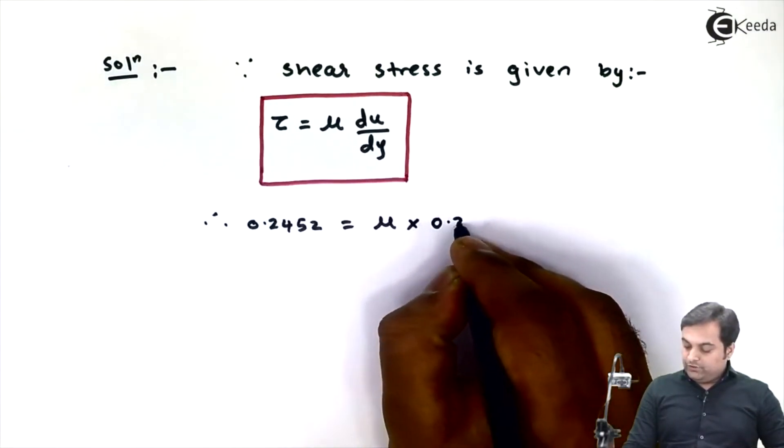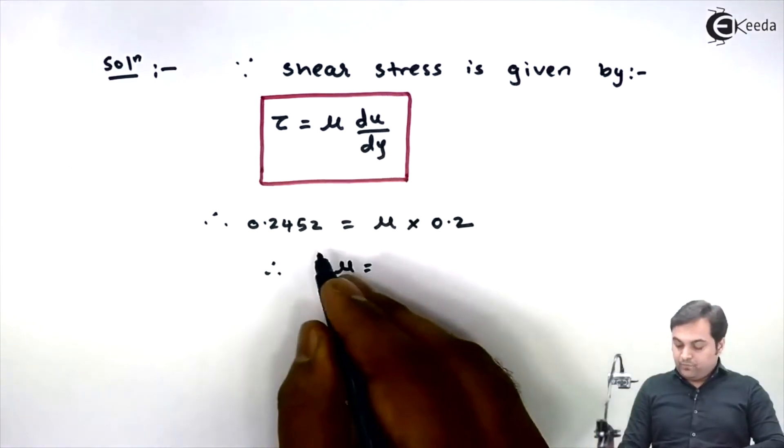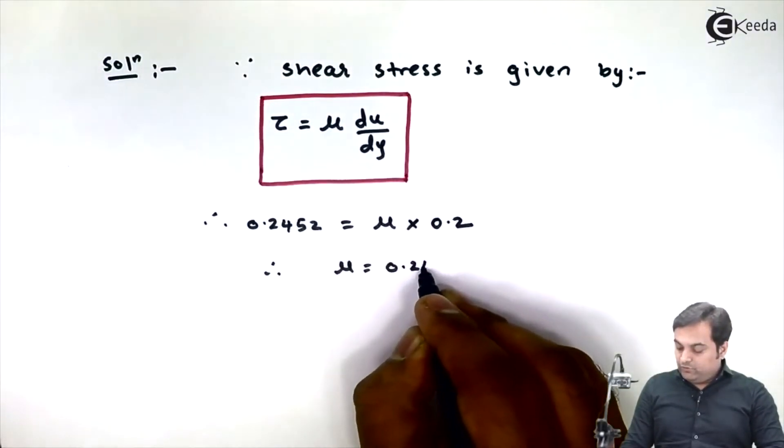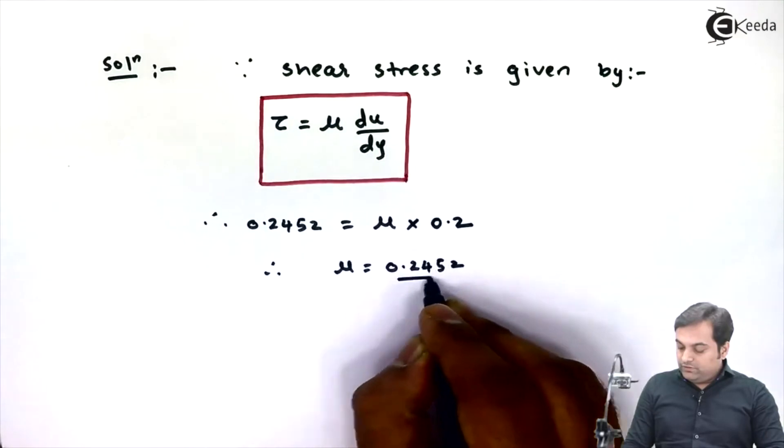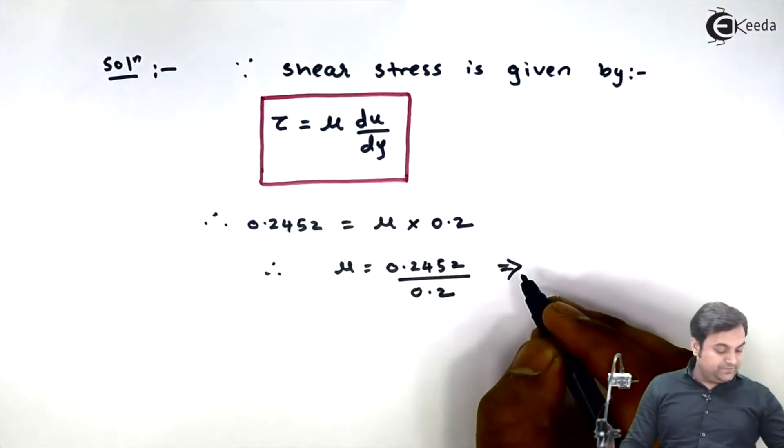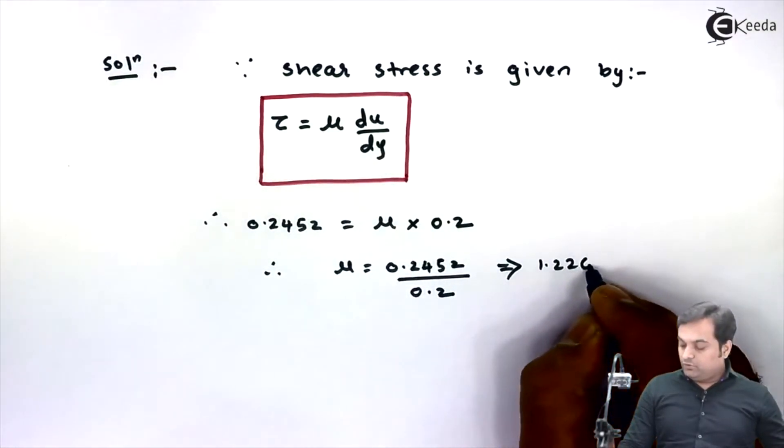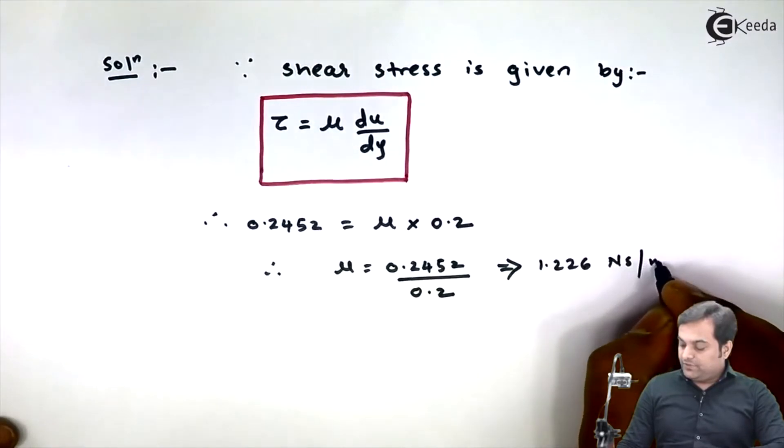So therefore mu will be equal to 0.2452 divided by 0.2 and my answer of mu is 1.226 Newton second per meter square.